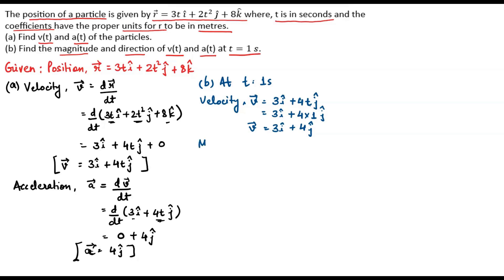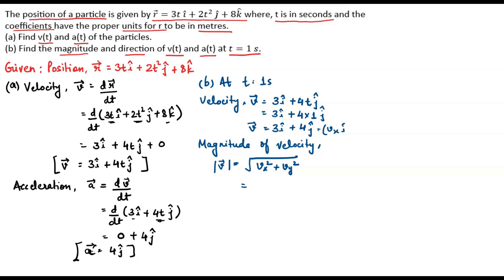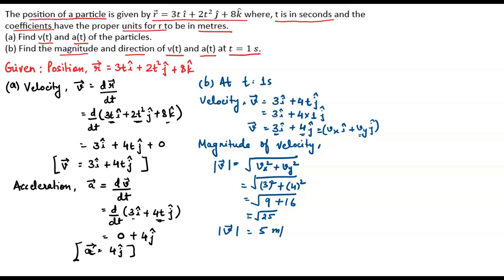Now we calculate the magnitude of velocity. The velocity is in the form vx i cap plus vy j cap, where vx is 3 and vy is 4. So the magnitude equals the square root of vx squared plus vy squared, which is the square root of 3 squared plus 4 squared, giving us the square root of 9 plus 16, which is the square root of 25. So the magnitude of velocity equals 5 meters per second.